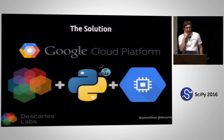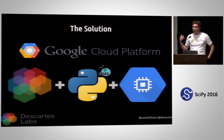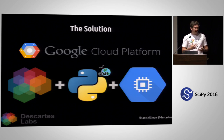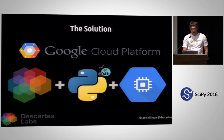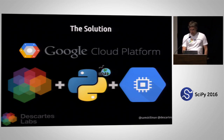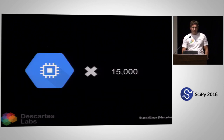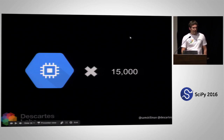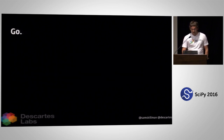We attacked this with Google Cloud resources, starting with Python, GDAL, NumPy — fantastic packages. We're not going to use just one CPU; that's not going to handle a petabyte of imagery in a day. We used 15,000 CPUs — 30,000 virtual CPUs. We started scaling up on Google Compute and hit go.